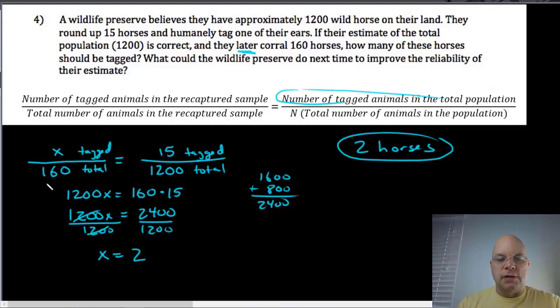When they recapture 160, which is more than a tenth of the population but not much more, they expect two of them to be tagged. Now the problem with expecting two to be tagged is if you expect two to be tagged, very likely only one will be tagged, in which case your estimate is off by half. Or zero could be tagged. If you only have 15 tagged horses out in this population of 1200, you can capture 160 all you want, but it's very likely that none of those 15 tagged horses will be in that group of 160 horses.